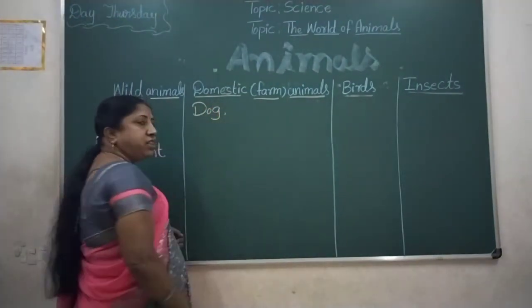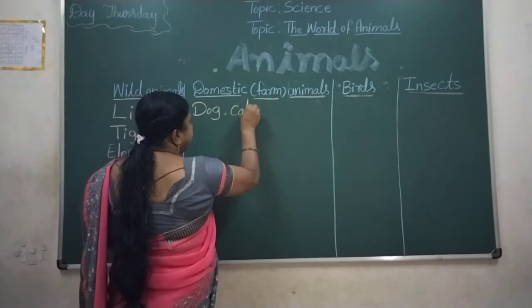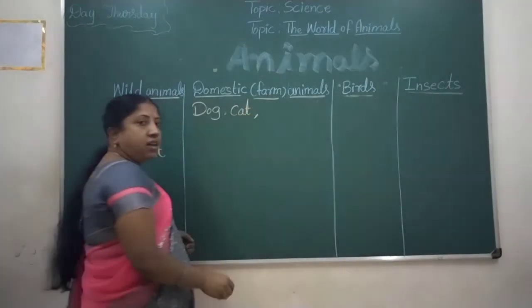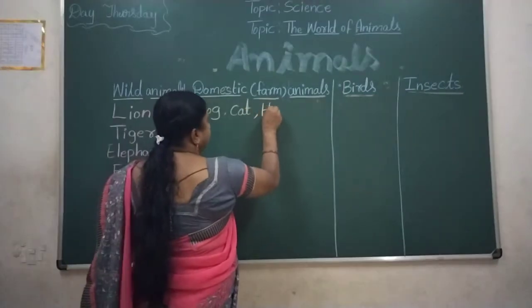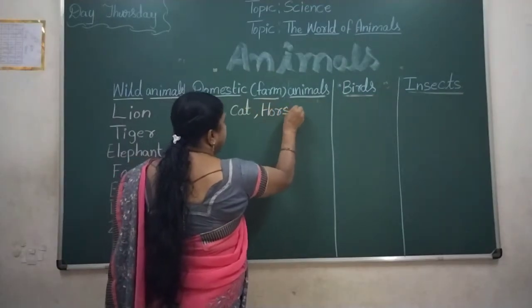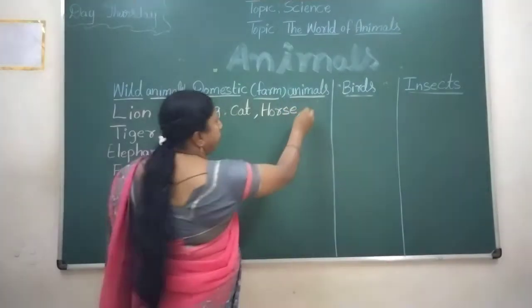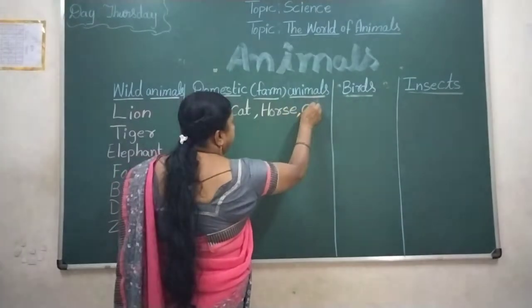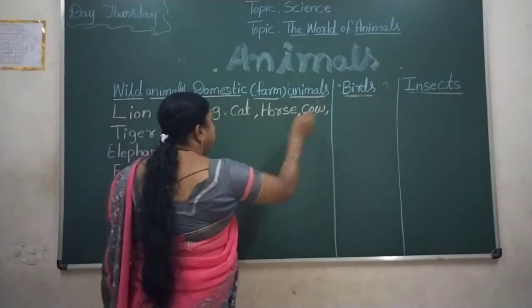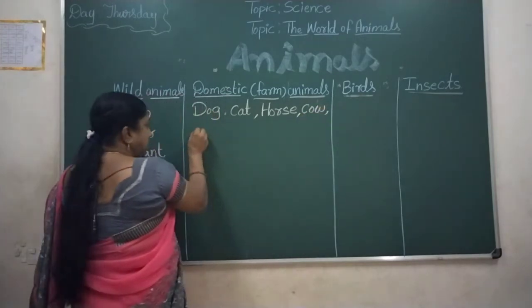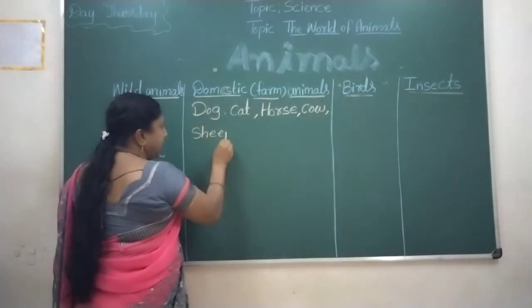Dog, cat, horse, cow, sheep — these are domestic animals.